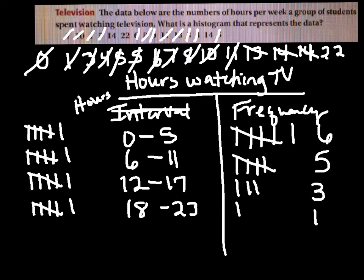If you look at the difference between the previous table and this one: with an interval size of 4, we got more intervals. When we changed to an interval size of 6, we got fewer intervals. That will always happen — the larger the interval size, the fewer the intervals.